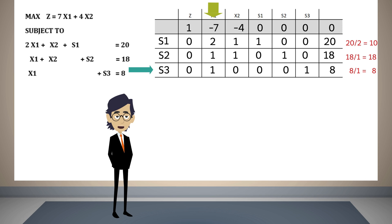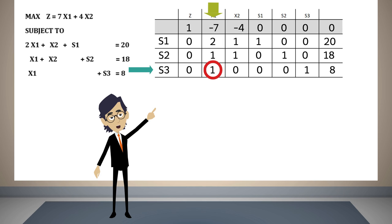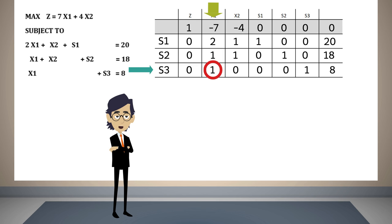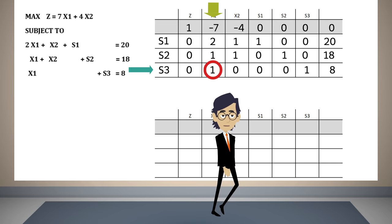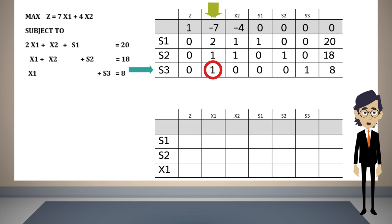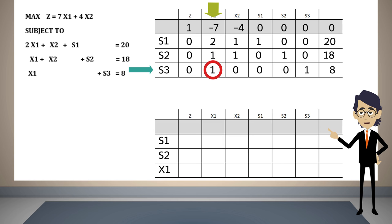This means that x1 will be basic and s3 will no longer be basic. The construction of the second table starts considering the number found in the intersection of the variable that enters the basis and the variable that leaves the basis. Our basic variables will be s1, s2, and x1. We start by placing the row of the entering variable in the second table. This row will be the same as the one in the previous table divided by the pivot number. Since that number is one, the row in the second table will be exactly the same. This row is known as the pivot row.